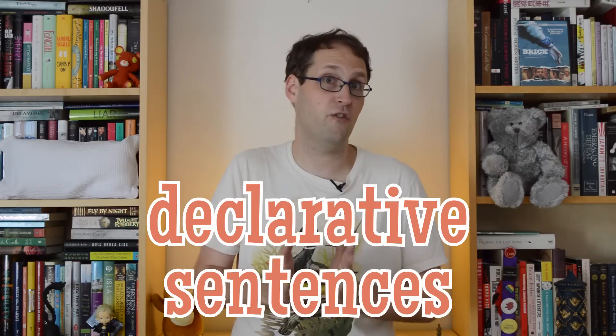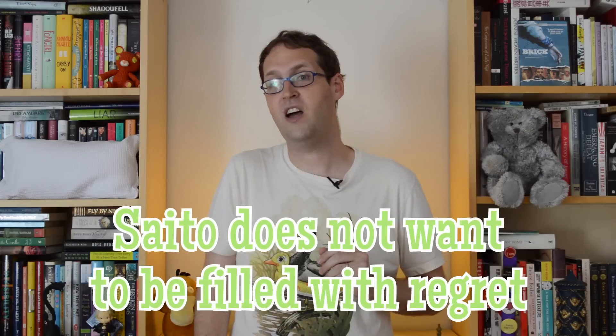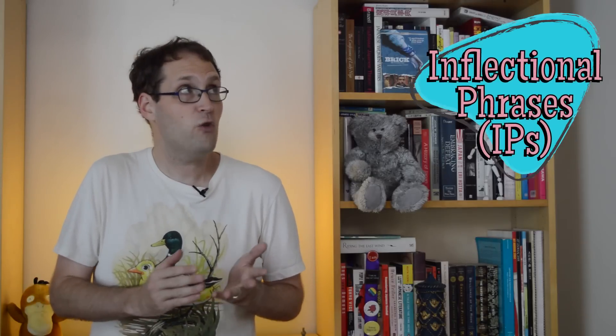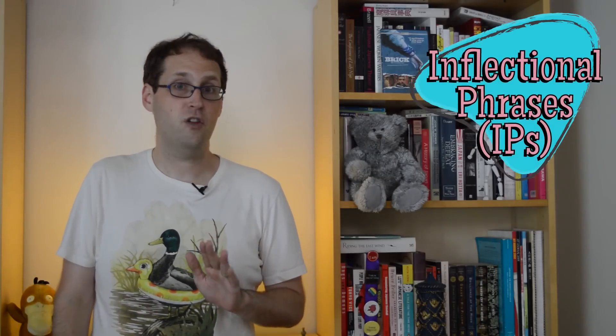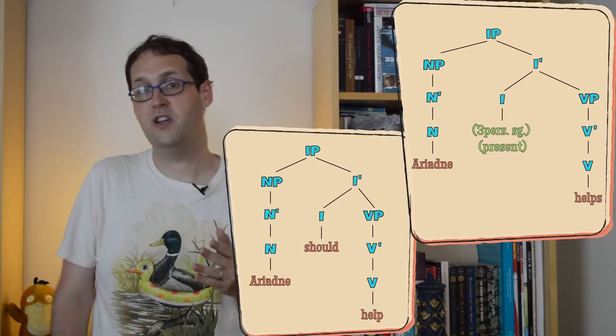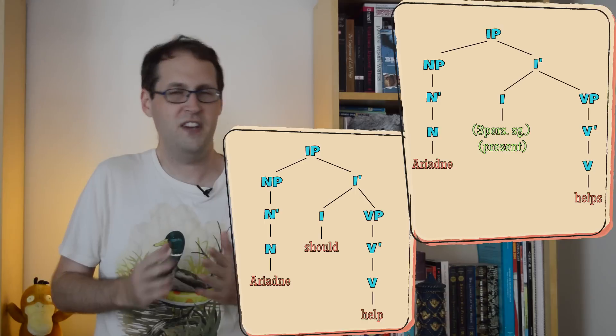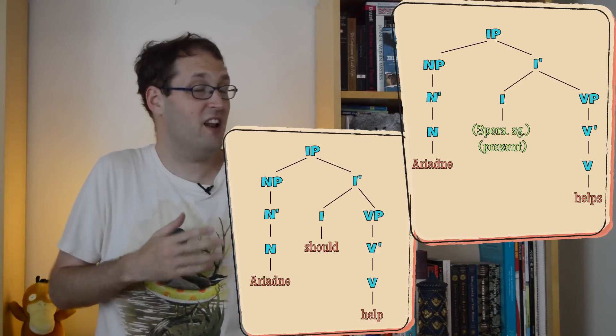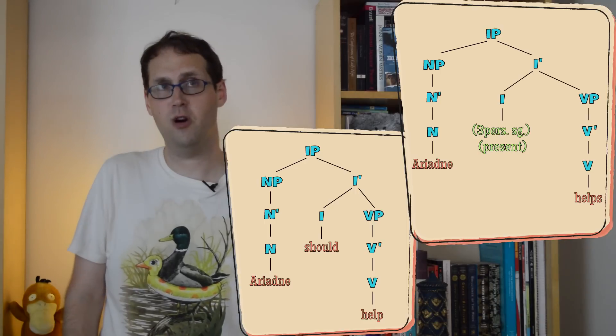Inflection can also live on its own in declarative sentences, like when negation blocks it from keeping in touch with the verb it's normally attached to. In 'Saito does not want to be filled with regret,' the tense and agreement information show up on 'do' instead of 'want.' And it can also get left behind when the verb disappears altogether. In the sentence 'Mal likes to dream, and Cobb does too,' we understand that the second part means 'Cobb likes to dream too.' The entire verb phrase has been erased, but the inflectional information stayed behind. So sentences look like they're in a one-to-one relationship with inflection, meaning that they're really inflectional phrases, or IPs. Our updated picture of a clause now looks like this, where that inflection part of the tree can either contain an auxiliary verb, or just some specification about the tense and agreement that eventually appear on the verb. Clauses now have the same three-layered structure as every other phrase.